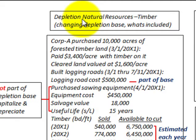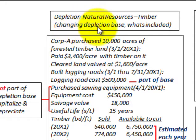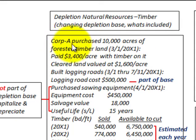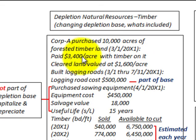What we're going to be looking at here is depletion of natural resources, and we're specifically going to be looking at timber — that's what you make lumber out of. We're going to be looking at a changing depletion base for this timber. For example, Corporation A, a lumber company, goes out and purchases 10,000 acres of forested timberland on March 1st, 20x1, and they paid $3,400 an acre — that's with the timber on it.